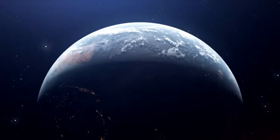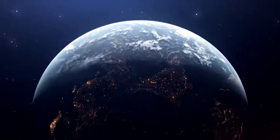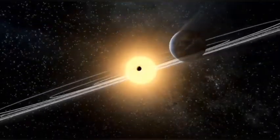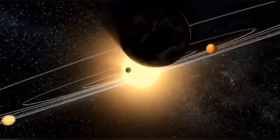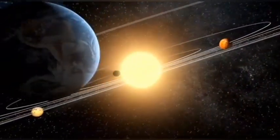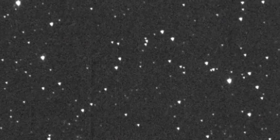When a comet plunges toward the Sun, a quiet transformation begins. At first, it is nothing more than a frozen speck, ice and dust locked together, orbiting in deep cold. But as the comet draws closer, sunlight grows fierce. This is perihelion, the moment of closest approach, when the Sun's heat is most intense and the comet's true nature is revealed.